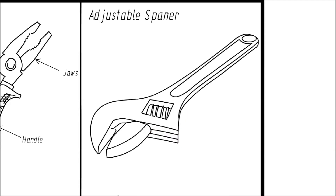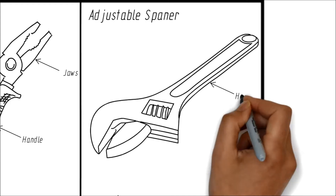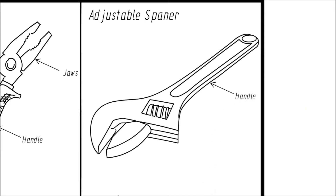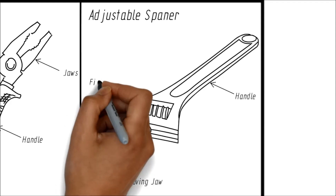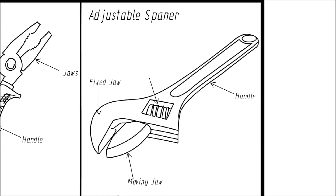Let us name the parts of the spanner: the handle, moving jaw, fixed jaw, and the adjustable screw.